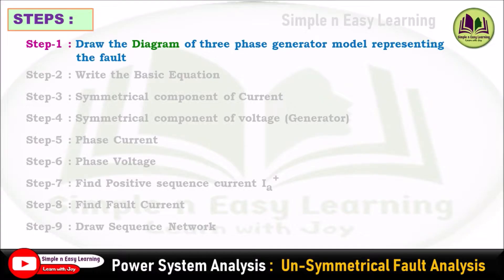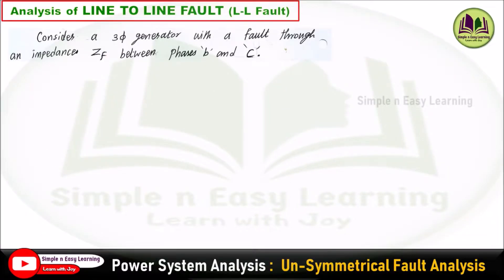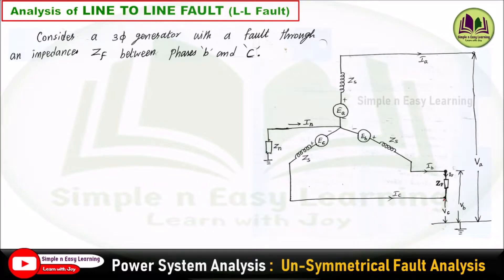Step 1: draw the diagram of the three-phase generator model representing the fault. Consider a three-phase generator with a fault through an impedance Zf between phases B and C. Here we are considering the fault occurs between phase B and C. The fault current is flowing in this path and the fault impedance is Zf. The voltages at all phases are Va, Vb, and Vc, and the currents are Ia, Ib, and Ic.